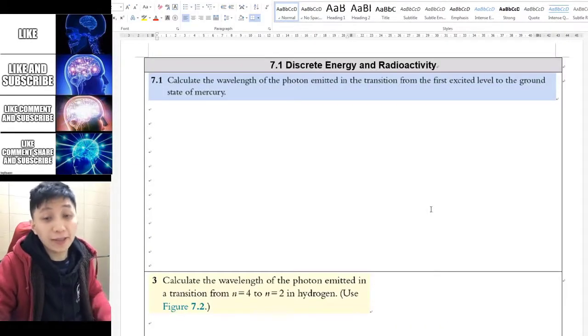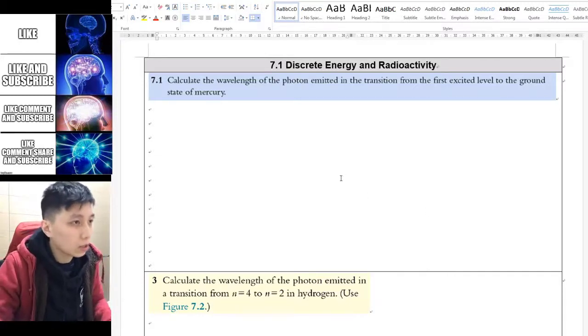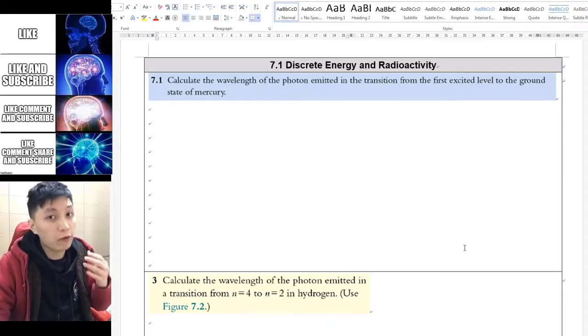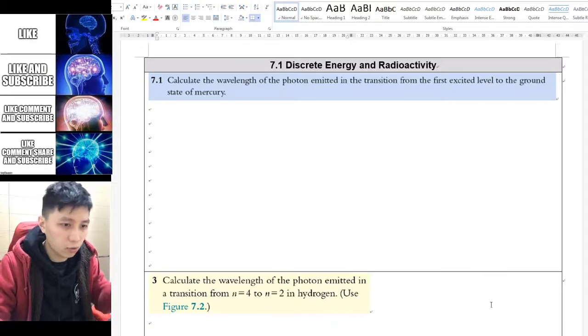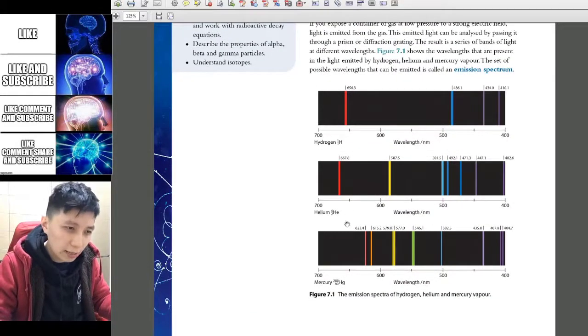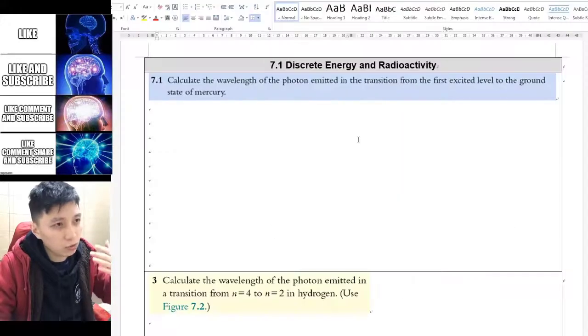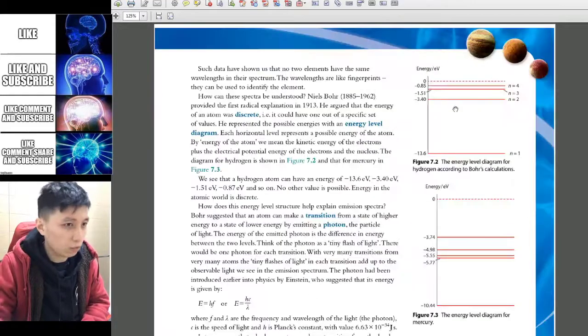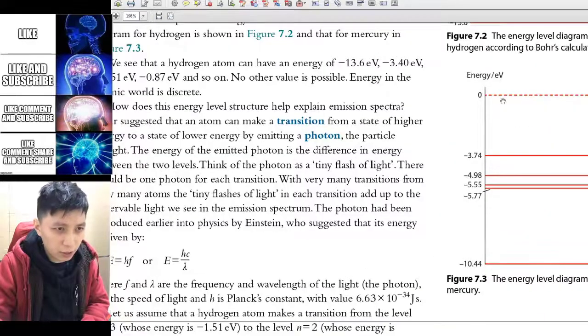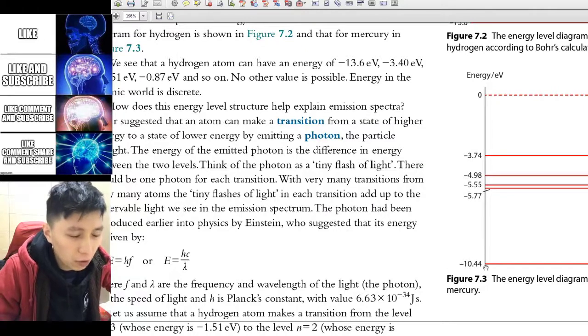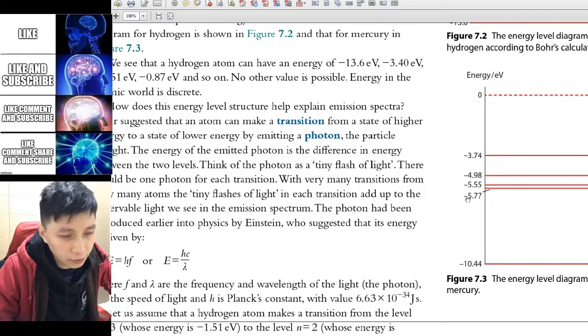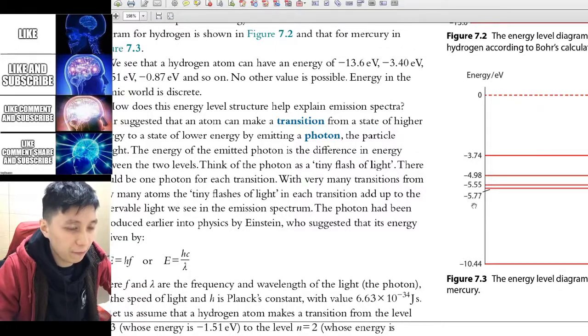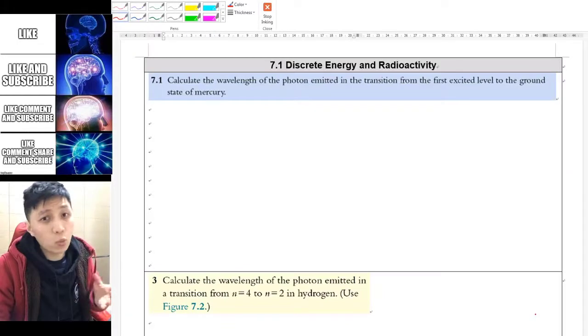Alright, so let's try to do an example together, and then you know how to do for the rest. It's actually quite simple. So the question says calculate the wavelength of the photon emitted through the transition from first excited level to ground state of Mercury. So normally, the question will provide you the diagram. However, this is from the textbook, so we have to look at the diagram from the textbook. We are not going to look at the emission spectrum because we are trying to use the energy level to find the wavelength. So we can't see the emission spectrum directly. We have to look at this one. So that is going to be figure 7.3 over here. So the first level or ground level is negative 10.44. The first or the level 2 is going to be negative 5.77.